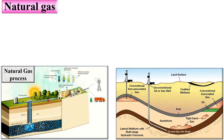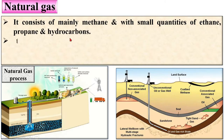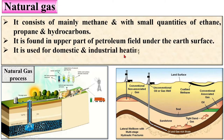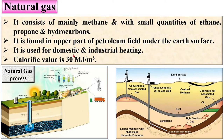Here you can see the extraction of natural gas. It consists mainly of methane, with small quantities of ethane, propane, and hydrocarbons. It is found in the upper part of the petroleum field — here you can see in the figure, the petroleum field is under the earth surface, and natural gas occupies the upper portion. It is used for domestic and industrial heating.